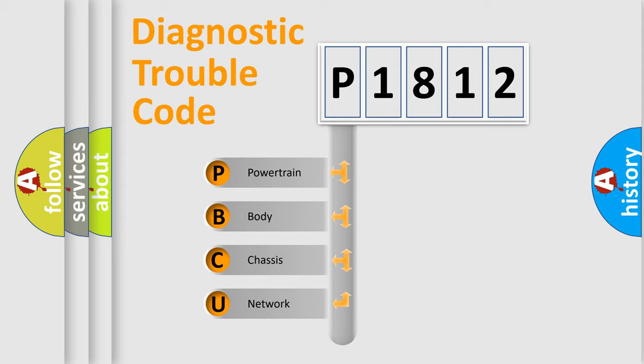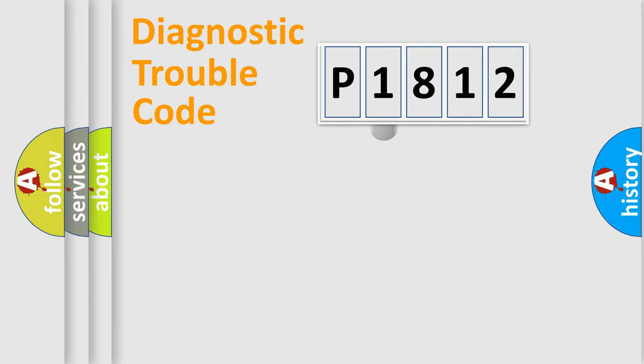We divide the electric system of automobiles into four basic units: Powertrain, Body, Chassis, and Network. This distribution is defined in the first character code.